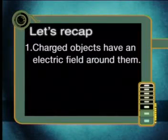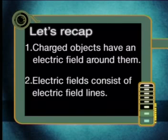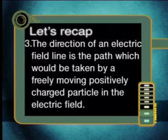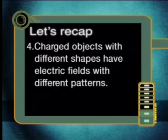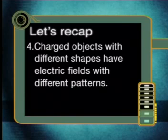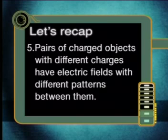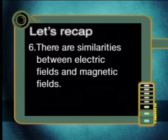Let's have a quick recap of what we have learnt in today's lesson. Charged objects have an electric field around them. Electric fields consist of electric field lines. The direction of an electric field line is the path which would be taken by a freely moving positively charged particle in the electric field. Charged objects with different shapes have electric fields with different patterns. Pairs of charged objects with different charges have electric fields with different patterns between them. There are similarities between electric fields and magnetic fields.